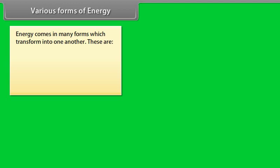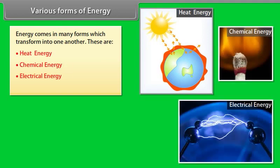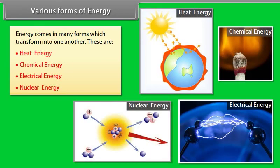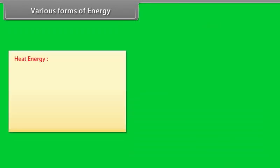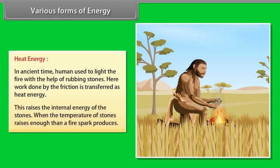Various forms of energy. Energy comes in many forms which transforms into one another. These are heat energy, chemical energy, electrical energy, nuclear energy. Heat energy: let us take an example for better understanding. In ancient time, human used to light the fire with the help of rubbing stones. Here work done by the friction is transferred as heat energy. This raises the internal energy of the stones. When the temperature of stones raises enough, then a fire spark produces.